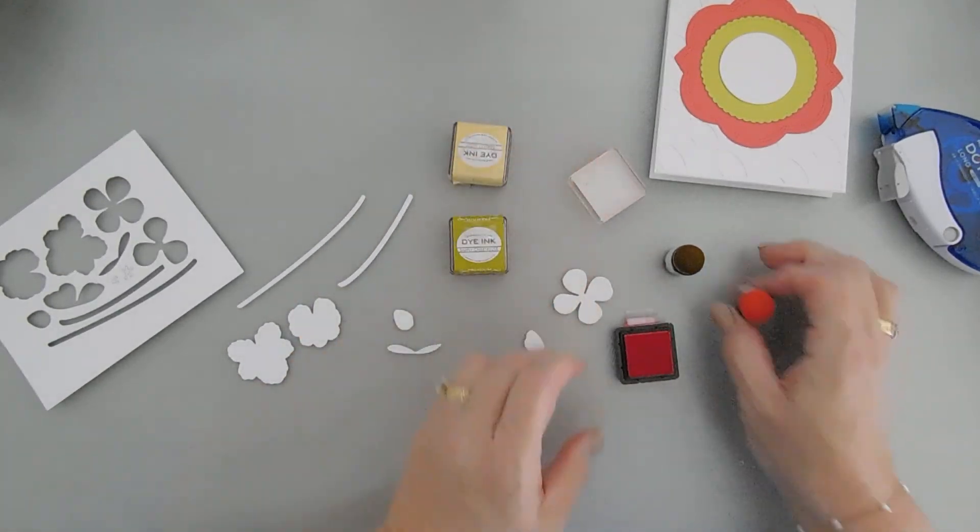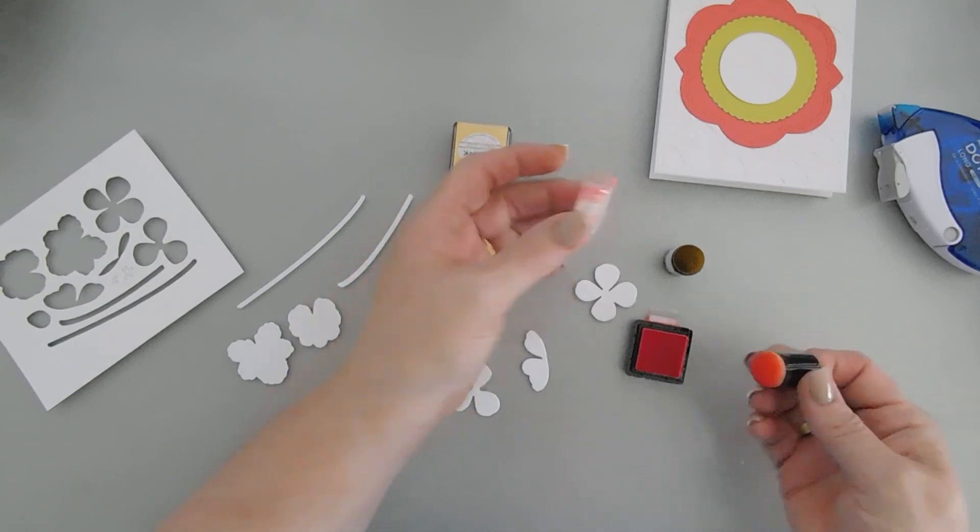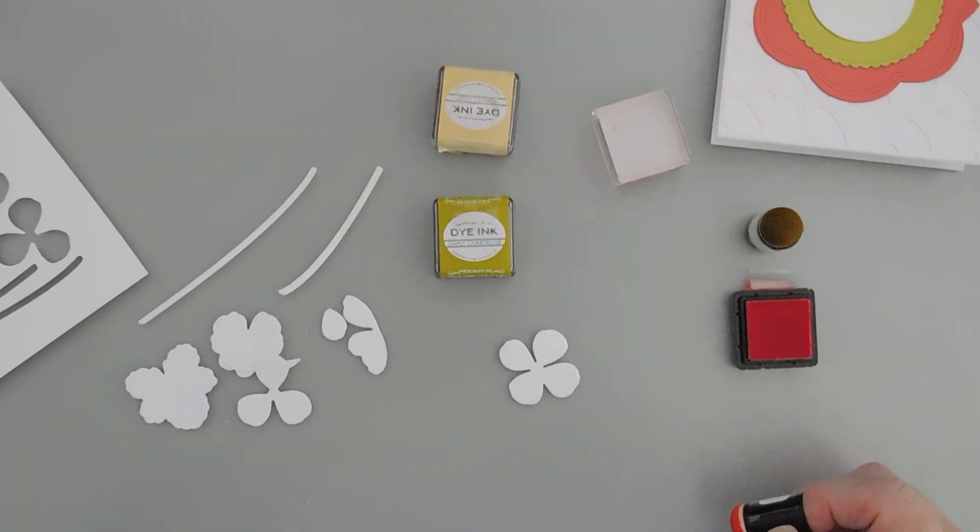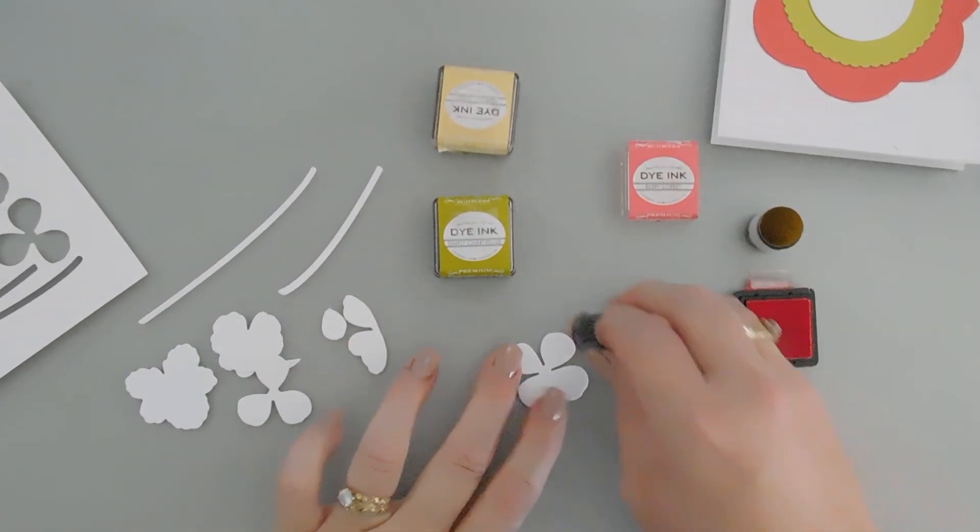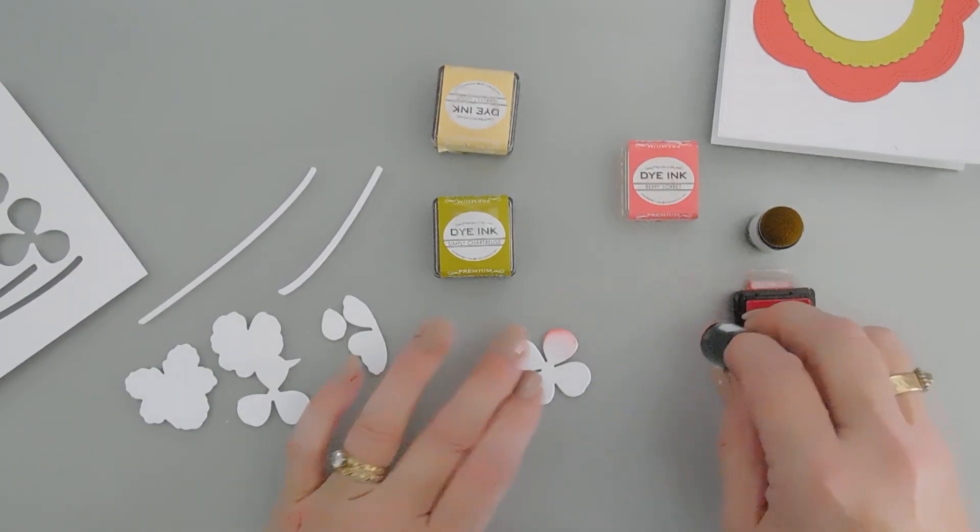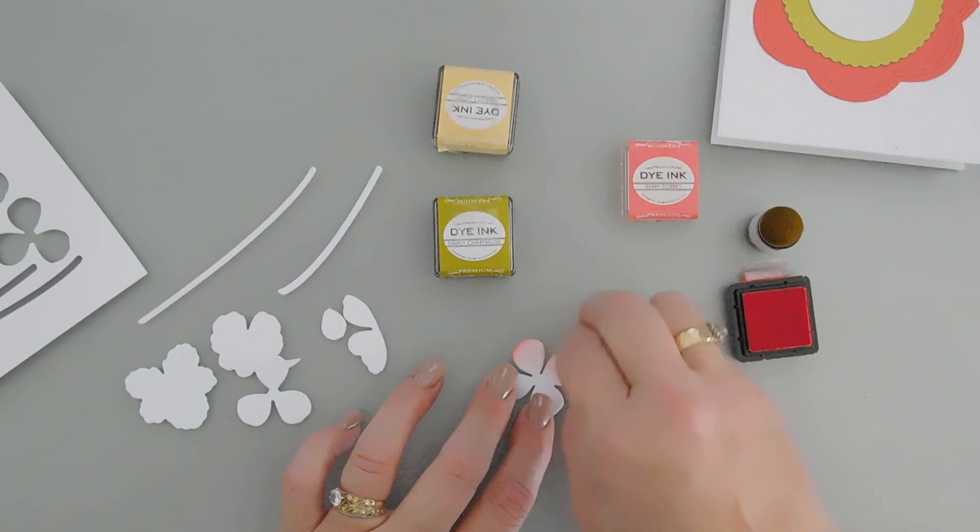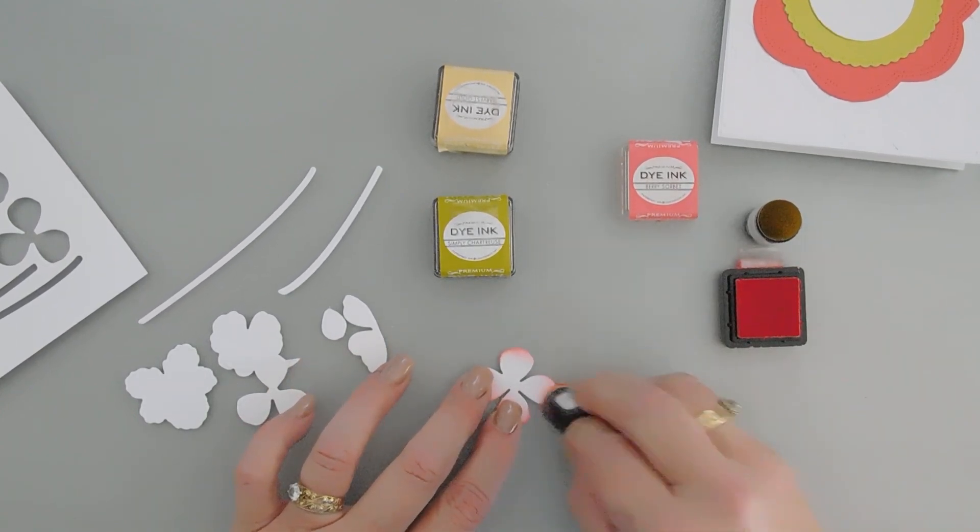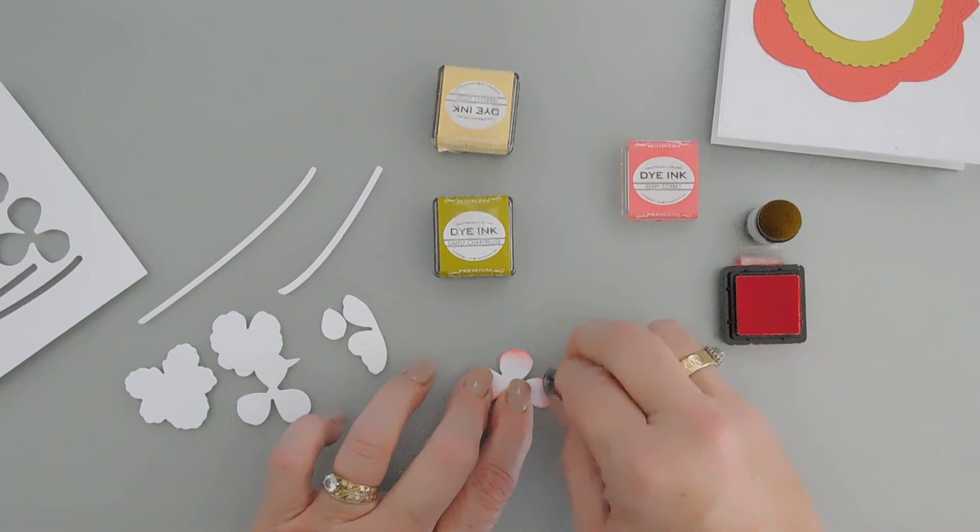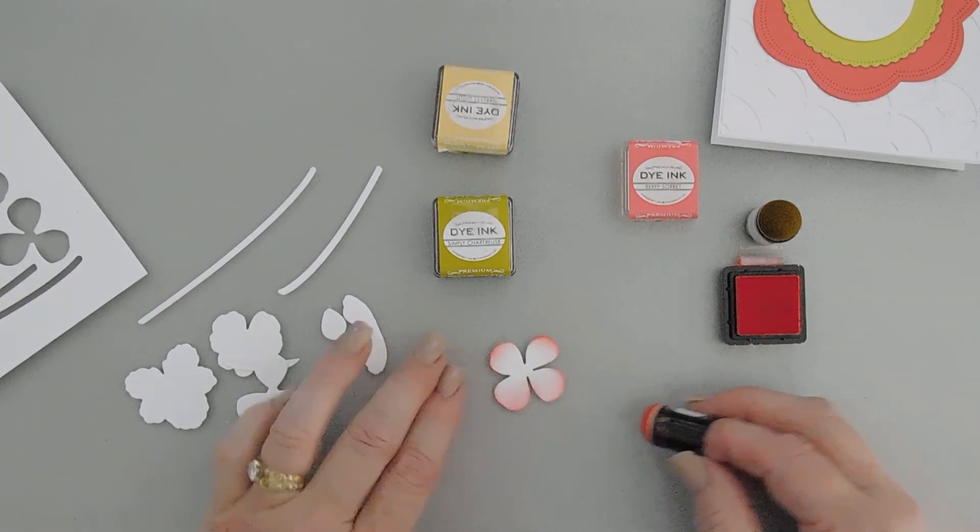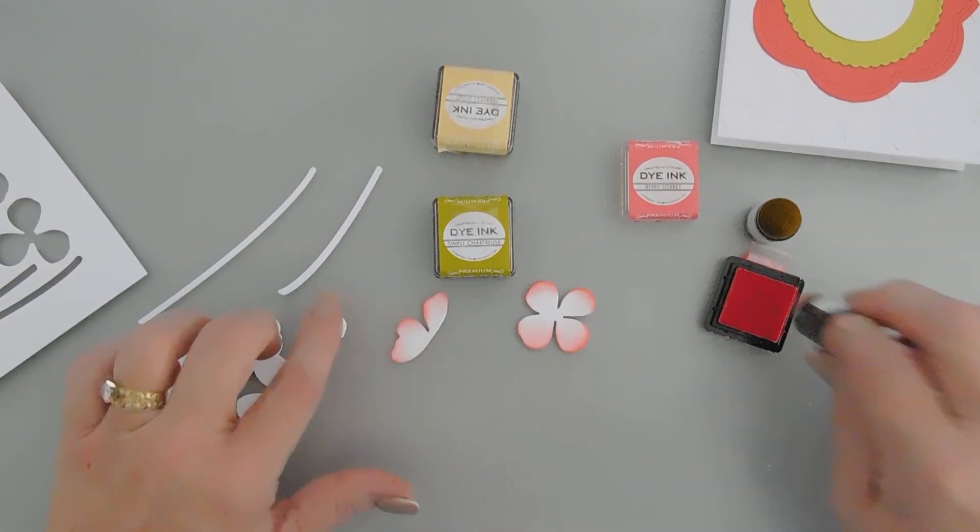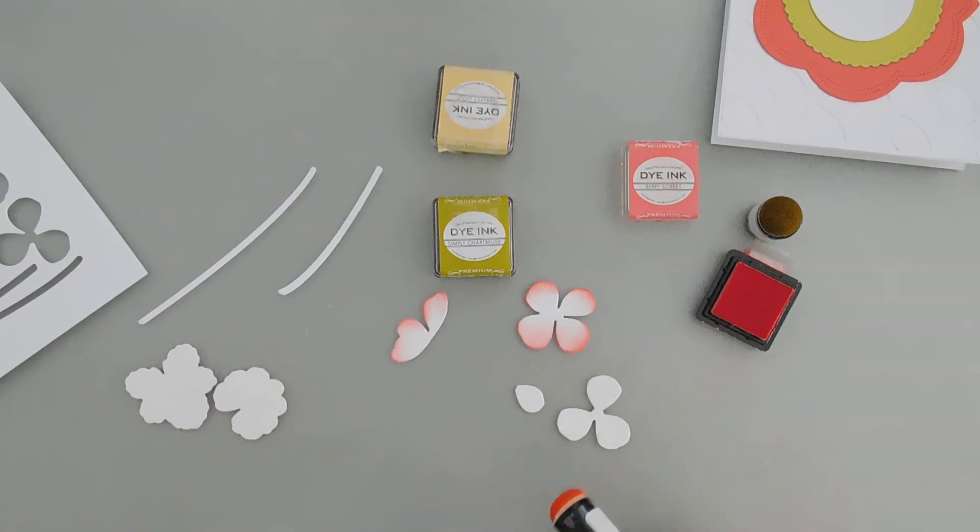We're going to take our Berry Sorbet, pick up a little ink. And I want it to be a little bit more softer on the inside. So I'm going heavy on the edges and kind of fading in towards the middle, leaving a little bit of the white area showing. Like that. I just think that's really soft and pretty. And I'm going to continue with these three pieces here.